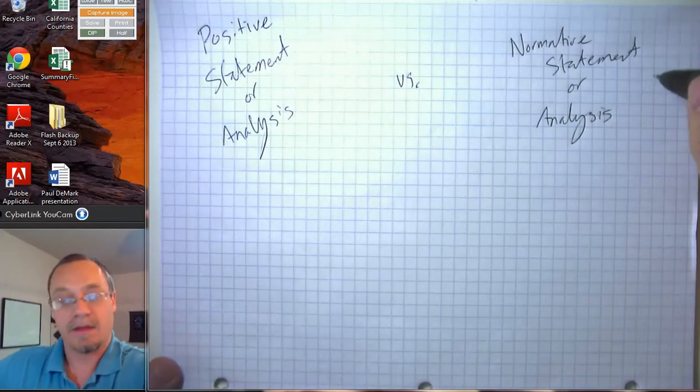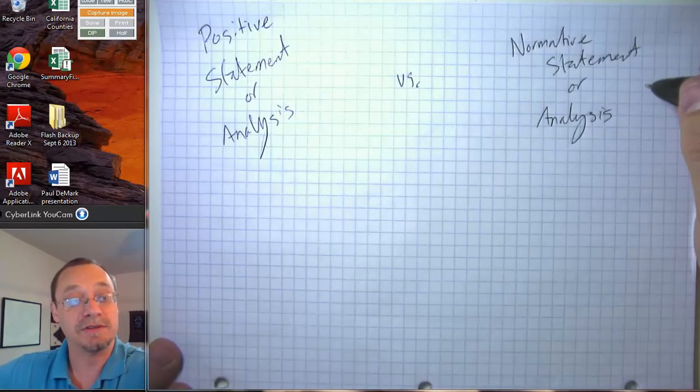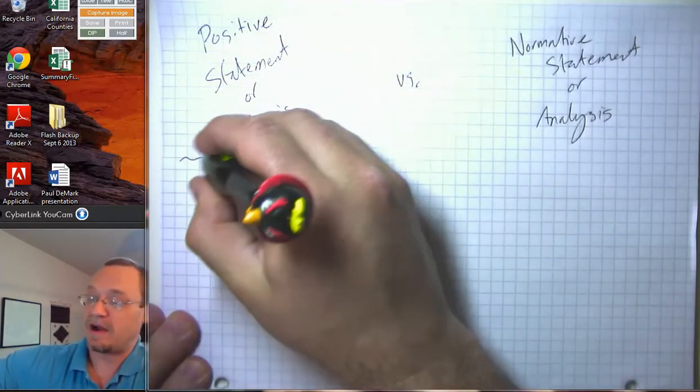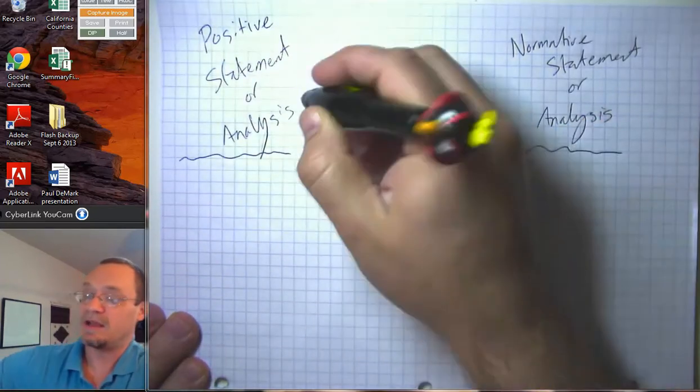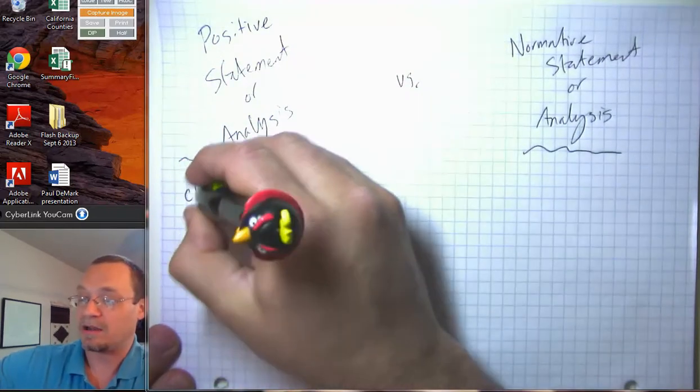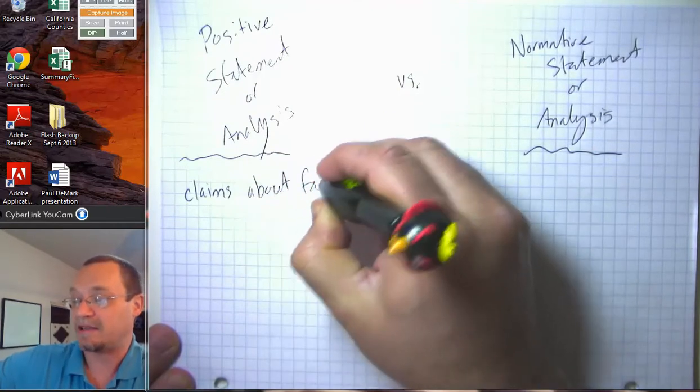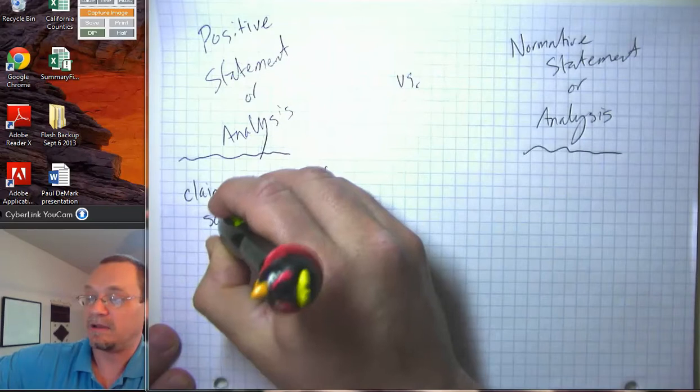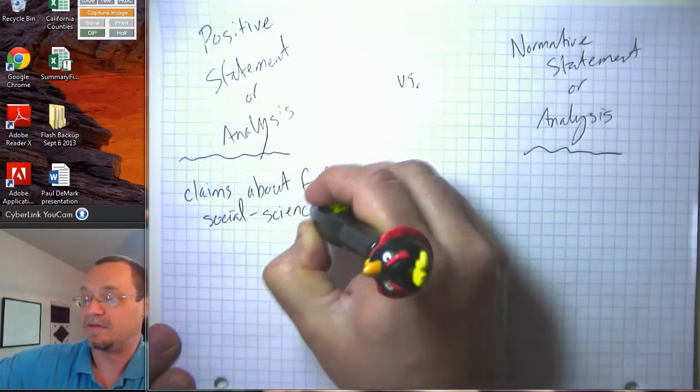So the distinction that we're trying to draw here is often tricky for students. The best way I've thought to explain it is that positive statements or analysis are claims about facts. So ultimately, these are matters of social science.